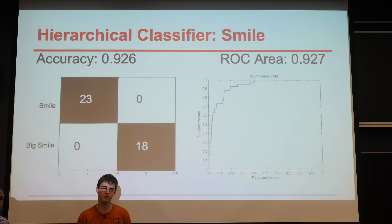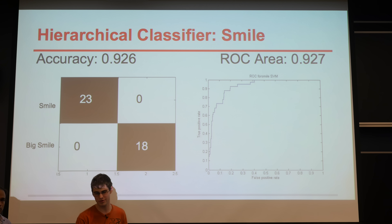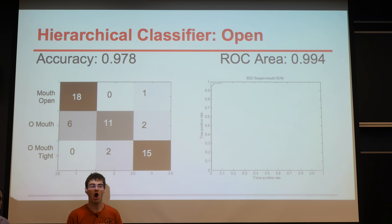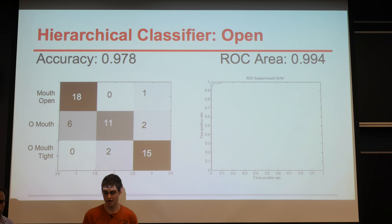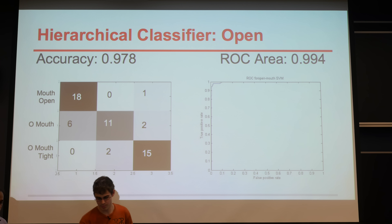There are two things on this slide. The confusion matrix on the left is for the intra-cluster data — distinguishing between smile and big smile, the two members of that cluster. On the right is the ROC curve for detecting whether an input is a member of the cluster. We did really well on smile. The open cluster — open mouth, O-mouth, various mouth shapes — we did pretty well on that too. The ROC curve is about as good as you can get, so we're pretty happy with this.